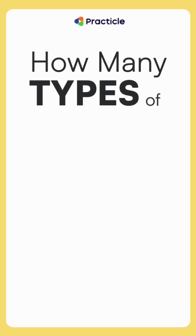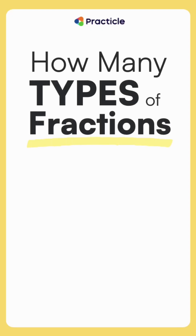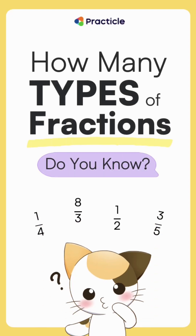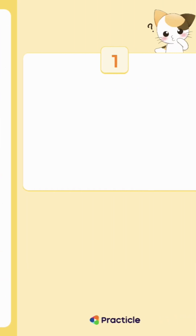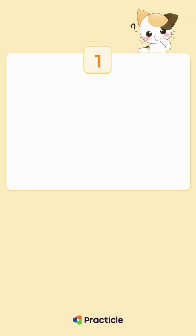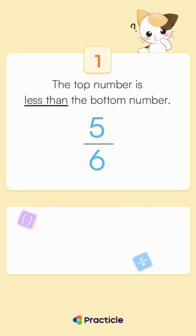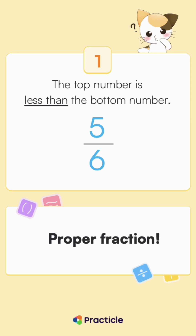How many types of fractions do you know? Fraction type number 1: the top number is less than the bottom number. It's a proper fraction.